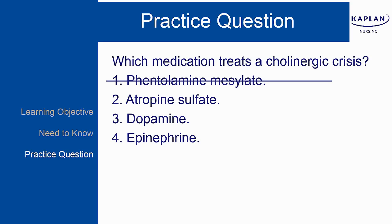Number one is incorrect — phentolamine mesylate is an alpha-adrenergic inhibitor. Number two, atropine sulfate, is the correct response. Atropine is used to treat certain aspects of cholinergic crisis. Atropine is an anticholinergic as well as antimuscarinic; it blocks acetylcholine at parasympathetic receptor sites, increases heart rate and cardiac output, and decreases secretions. Side effects include tachycardia, cardiac dysrhythmias, blurred vision, dry mouth, constipation, and urinary retention. Nursing considerations include monitoring heart rate, vital signs, vision, and gastrointestinal function. Clients should be instructed to report blurred vision and urinary retention. Number three is incorrect — dopamine is an adrenergic stimulator depending on dosage. Number four is incorrect — epinephrine is a beta-1 and beta-2 adrenergic stimulator.